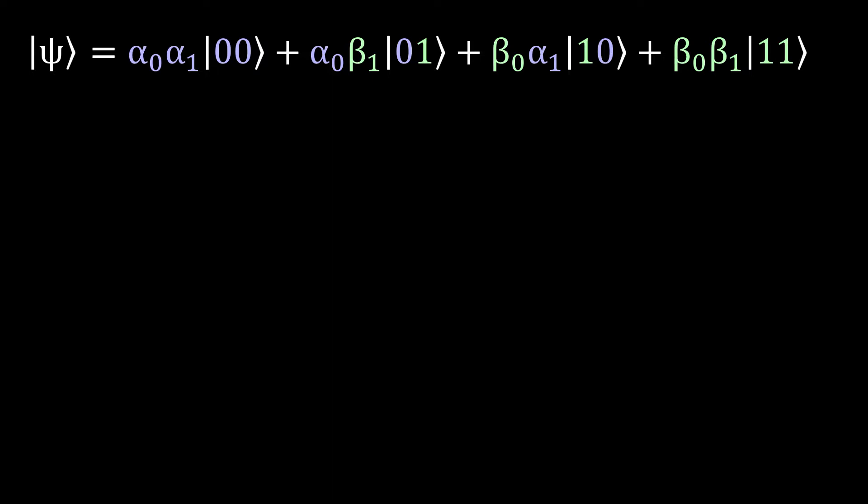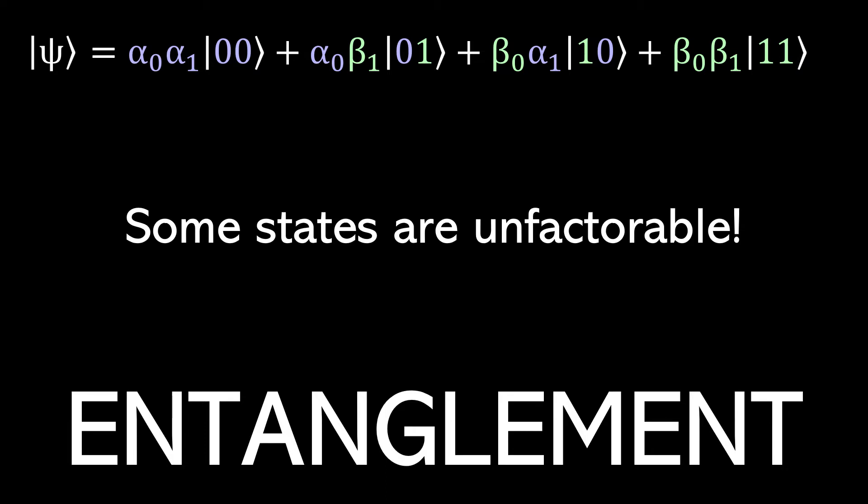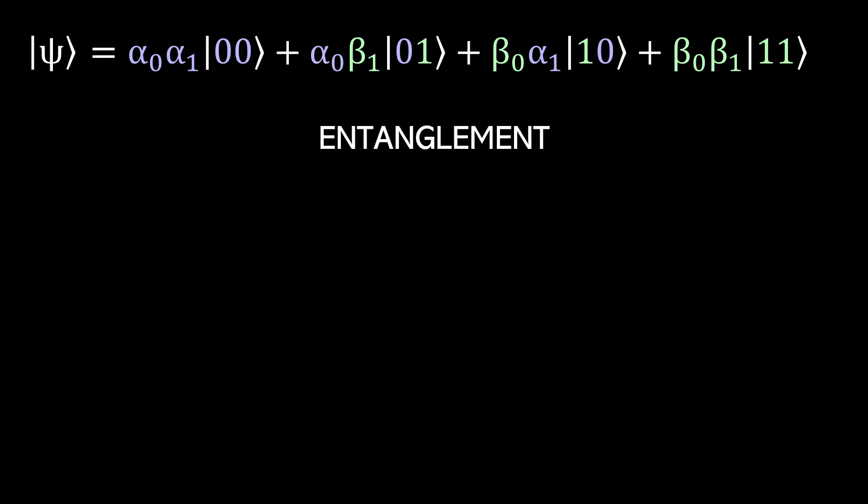So that means that any two single qubit states can be multiplied into a multi-qubit state. You're probably asking yourself, does this go in reverse? Can I take any multi-qubit state and decompose it into its constituent single qubit states? No. Some states are completely unfactorable. Quantum physicists have a word for these kind of states. They call them entanglement. The classic example of entanglement is called the bell state, and it looks like this.